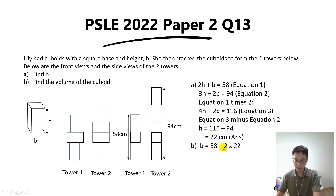58 minus 2 times 22, you should get 14 cm. That's the breadth, the length of the square, which is 14.